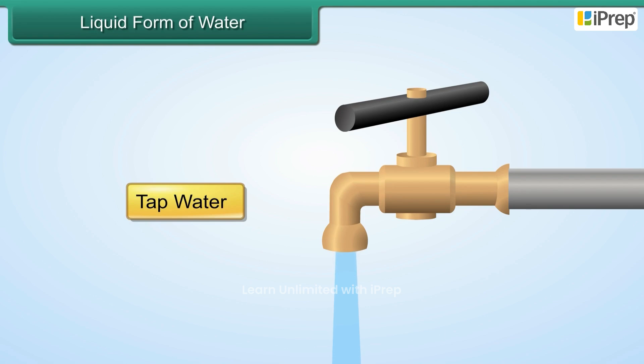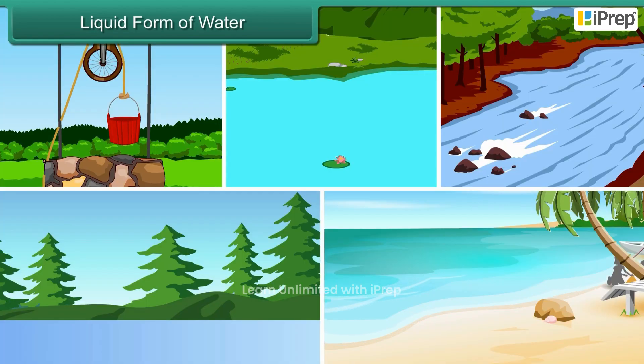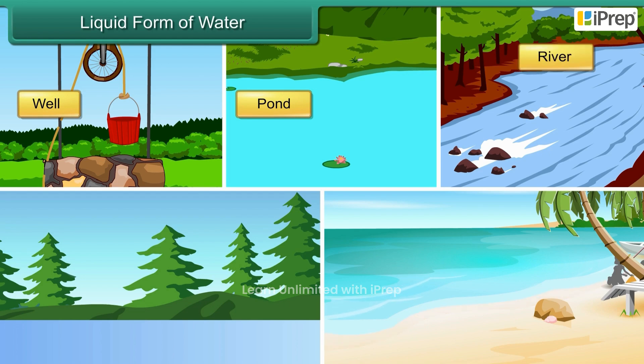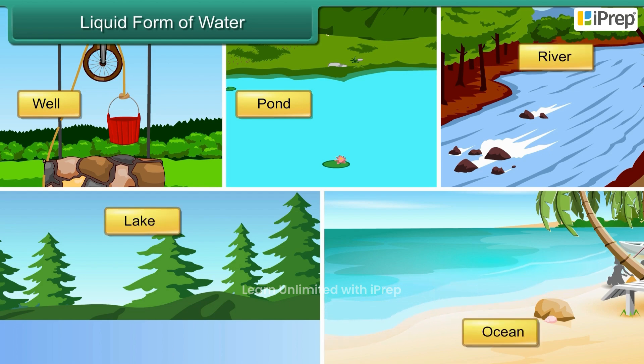Other examples of water in liquid form are water found in wells, ponds, rivers, lakes, and oceans.